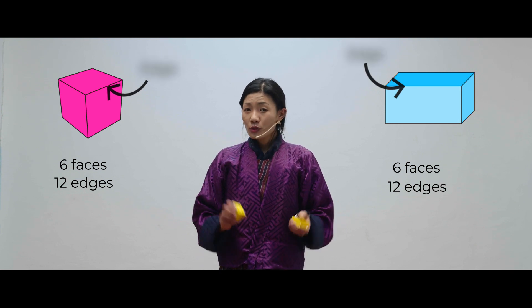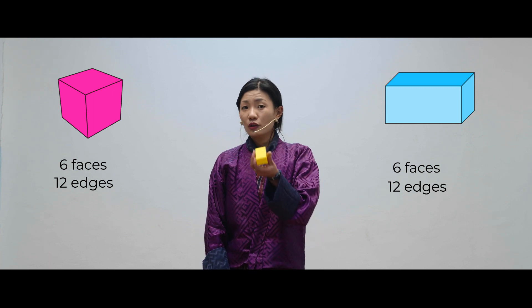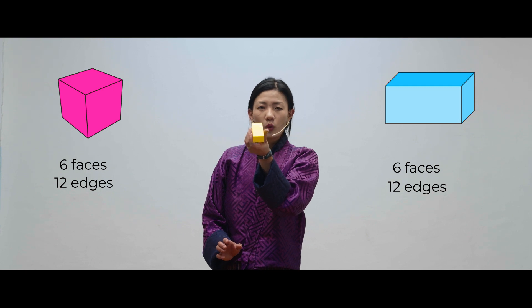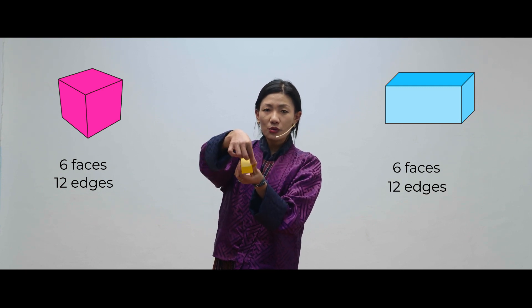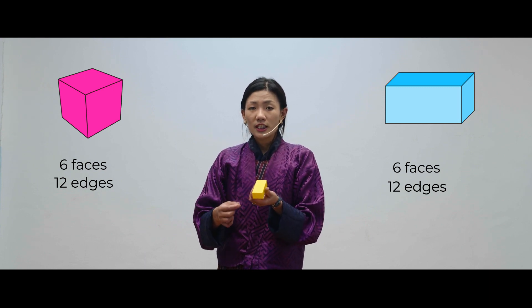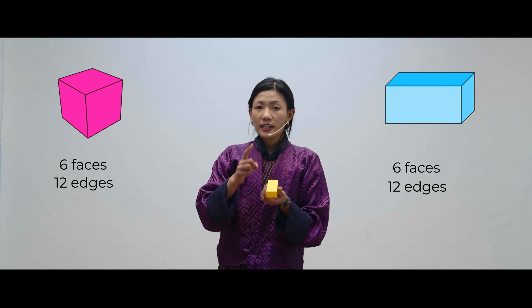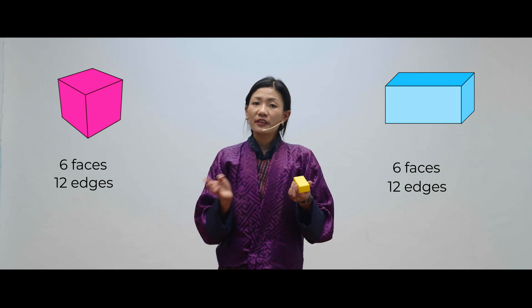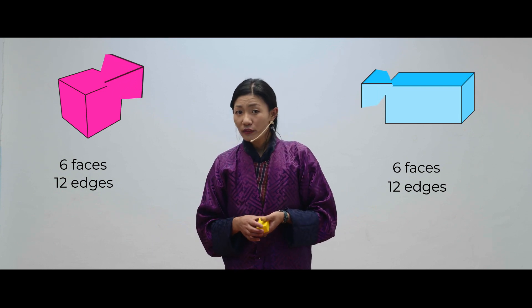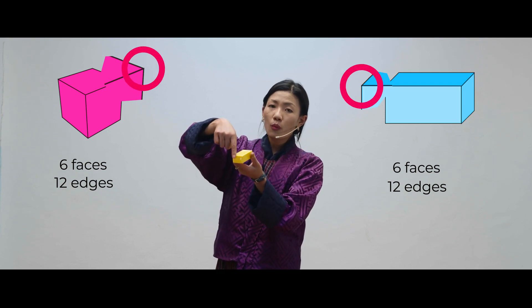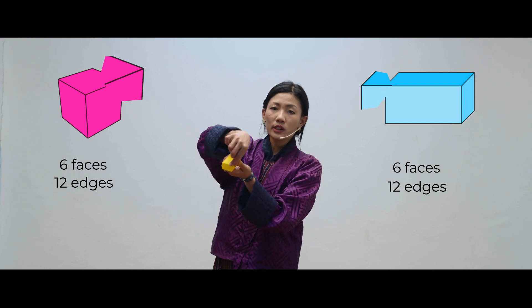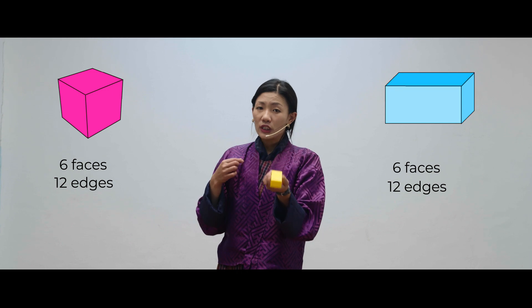They also have something in common again. If you look carefully, do you see something that looks like a corner? In a 3D shape, we call them vertices. If there is only one corner, it will be called a vertex. But if there are more than one, we call them vertices. What is a vertex? When two or more edges meet, the point is called a vertex or vertices.